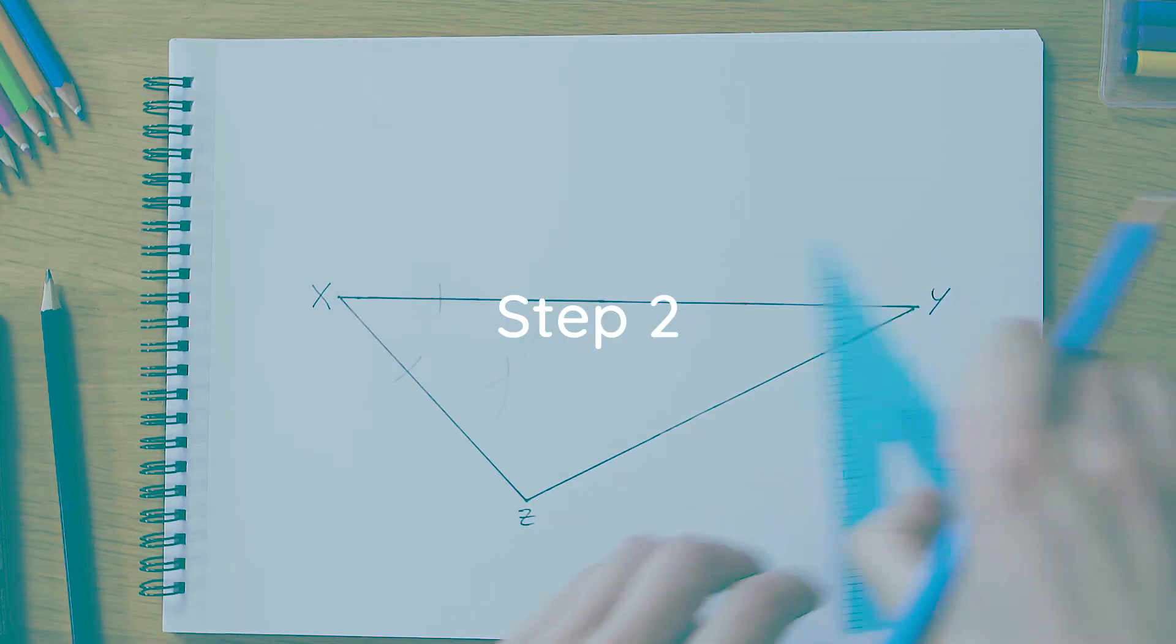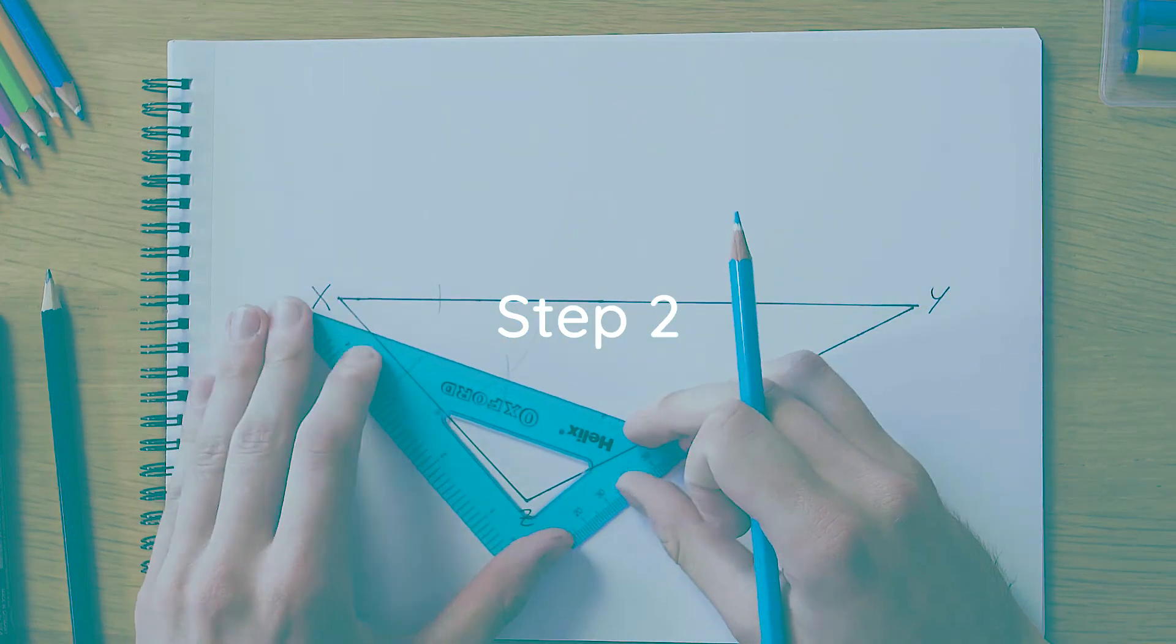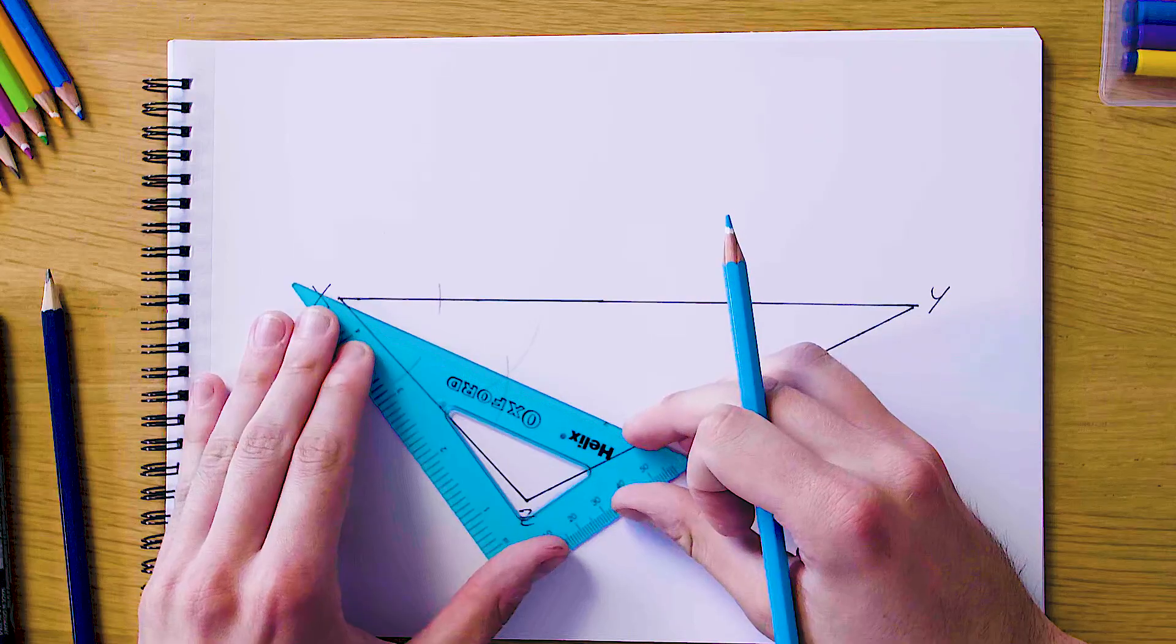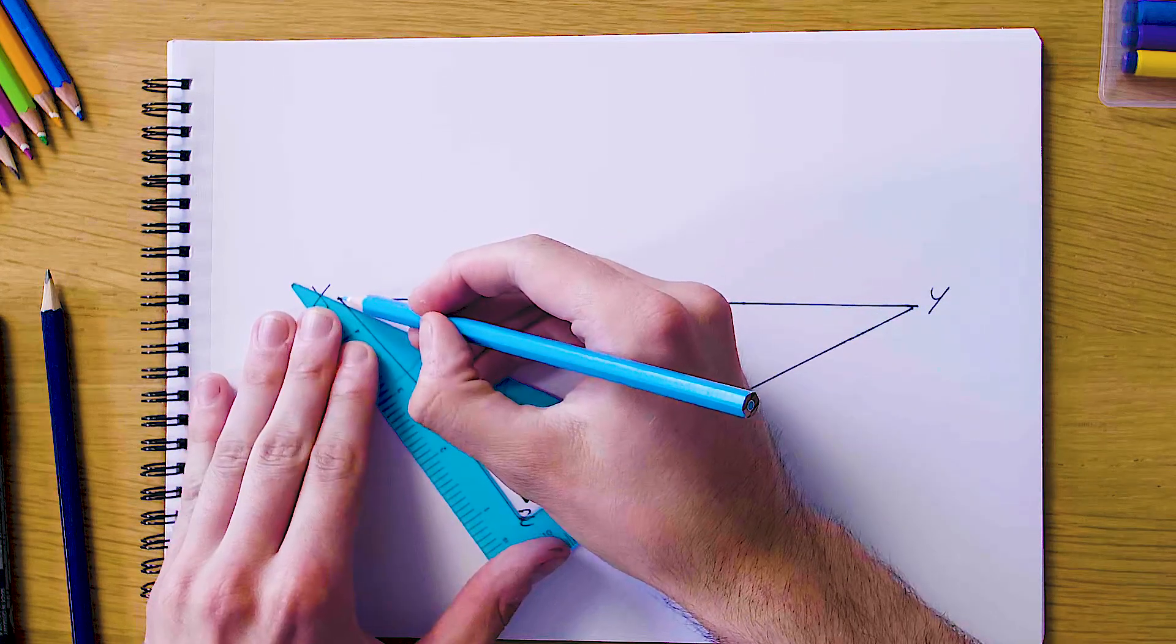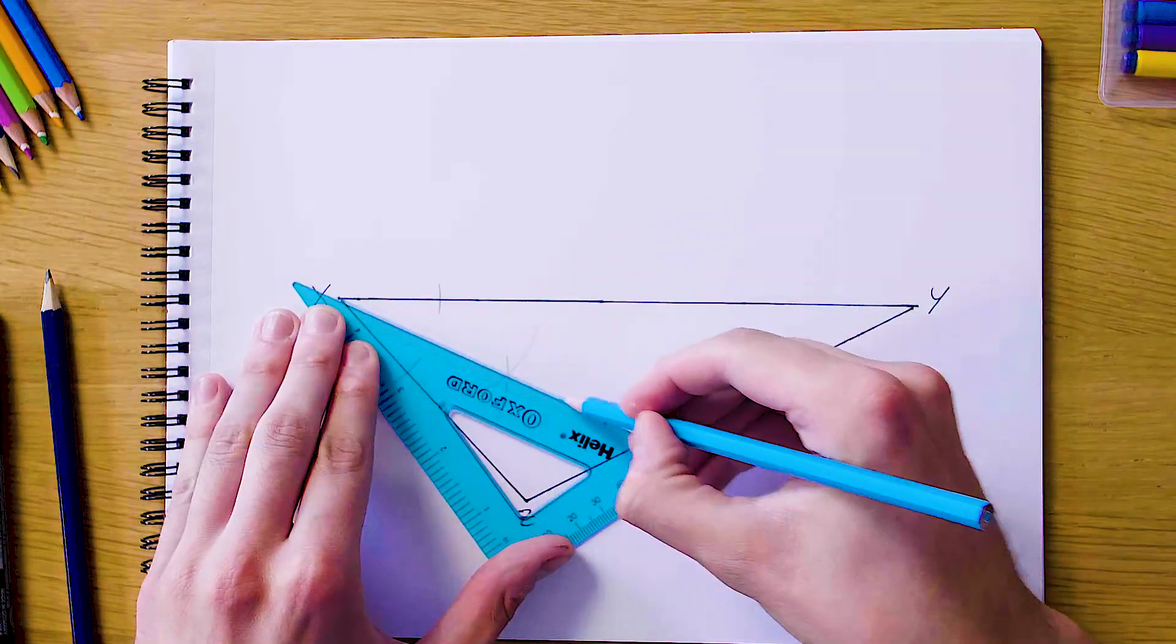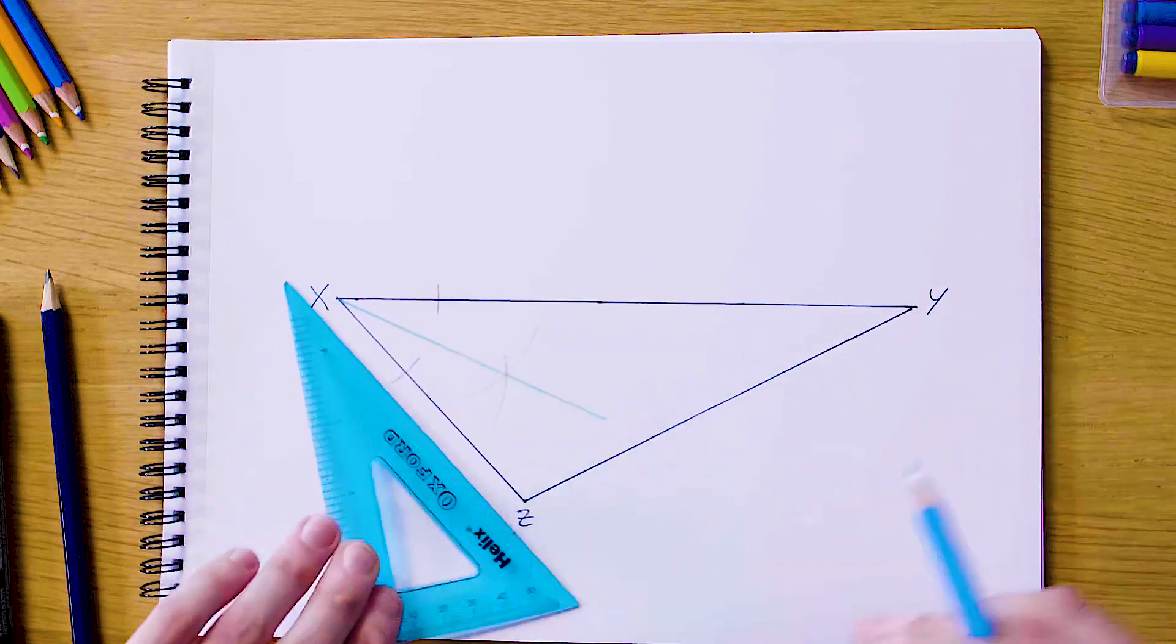The next step now is going to be to just join the vertex at X to this new intersection. So we're just going to join it and get a nice angular bisector which is going to come out nicely into the middle so it can cross with our next angular bisector as well.